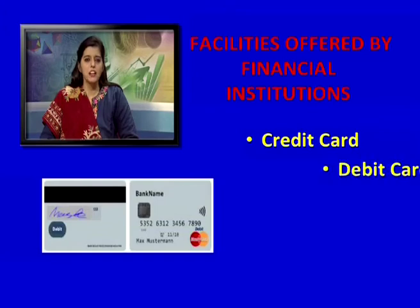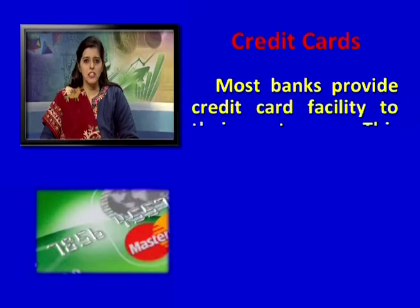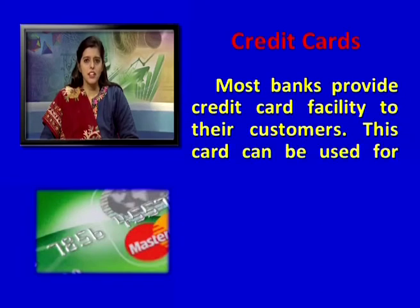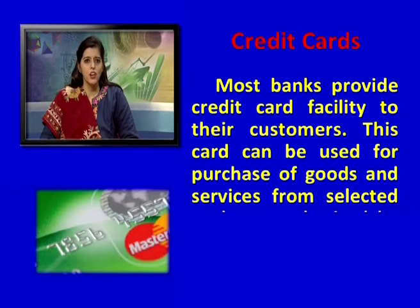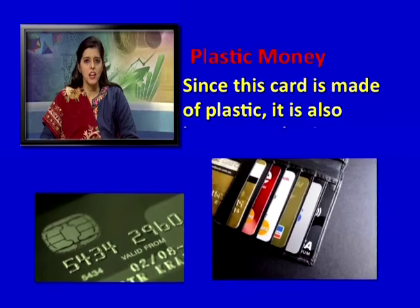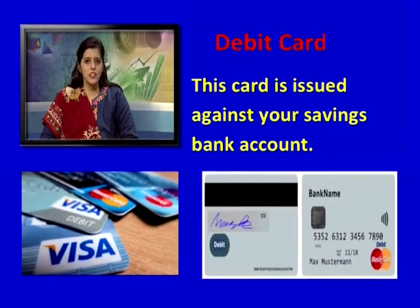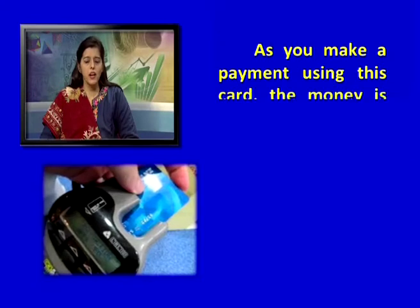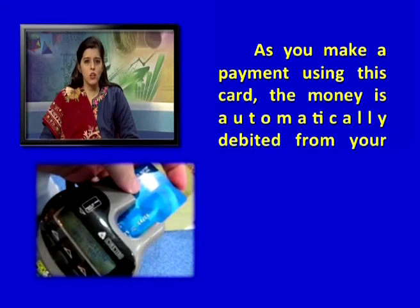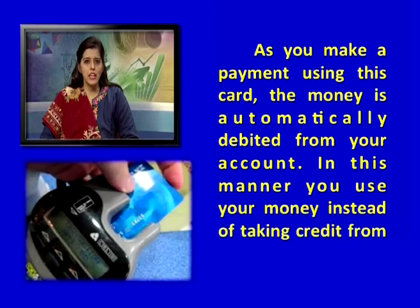Different facilities offered by financial institutions: credit card, debit card, ATM card, loan, and e-banking. Credit cards: most banks provide credit card facility to their customers. This card can be used for purchase of goods and services from selected outlets authorized by the bank. Since this card is made of plastic, it is also known as plastic money. Debit card: this card is issued against your savings bank account. As you make a payment using this card, the money is automatically debited from your account — you use your own money instead of taking credit from the bank.